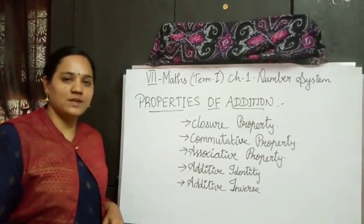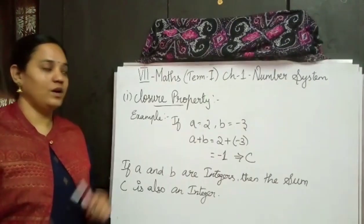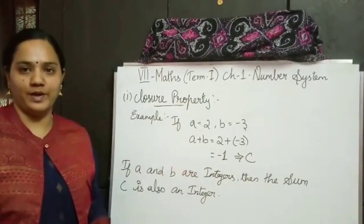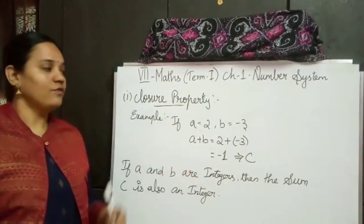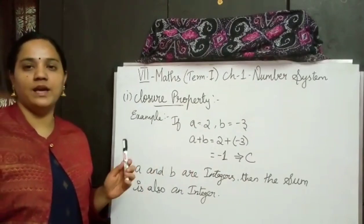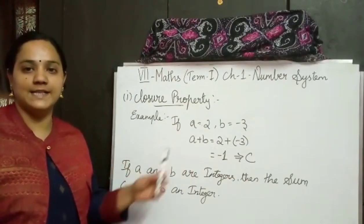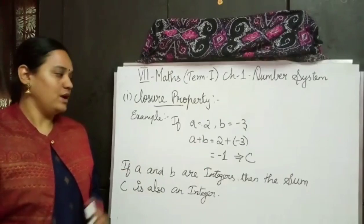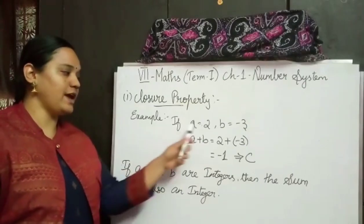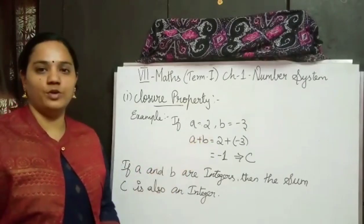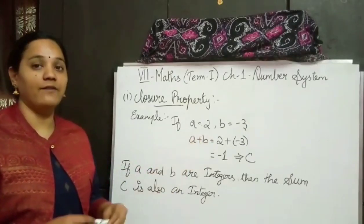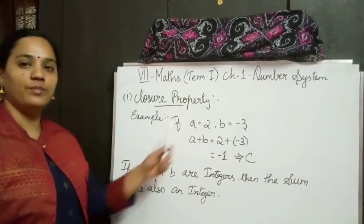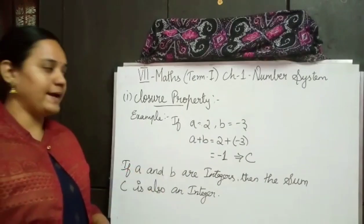Shall we go into our subject, children? Now I am going to explain you closure property. For explaining closure property let me explain you one example, and finally we can conclude the property. Now if a is equal to 2 and b is equal to minus 3. I have taken the value for a as 2 and the value for b as minus 3.